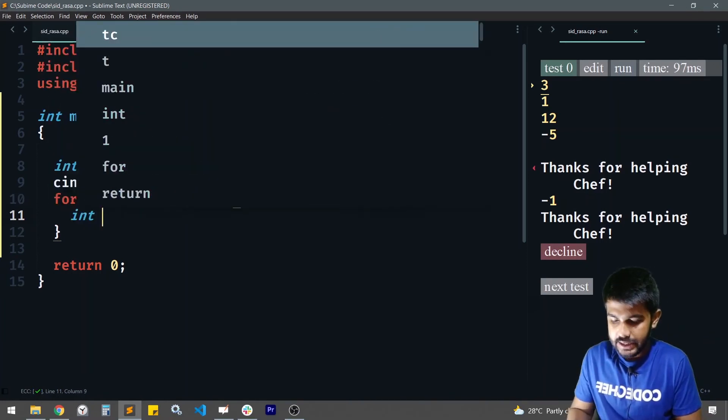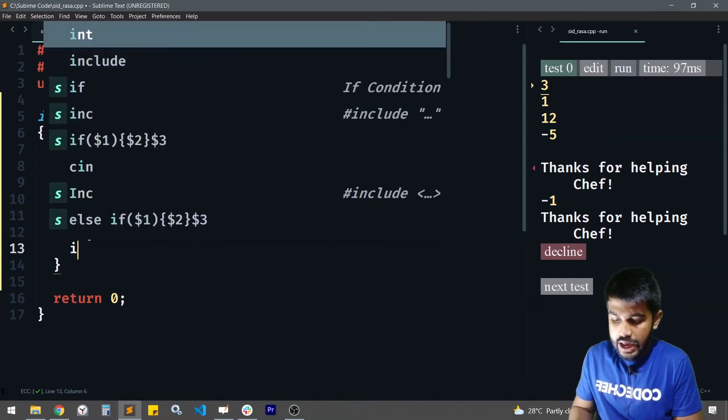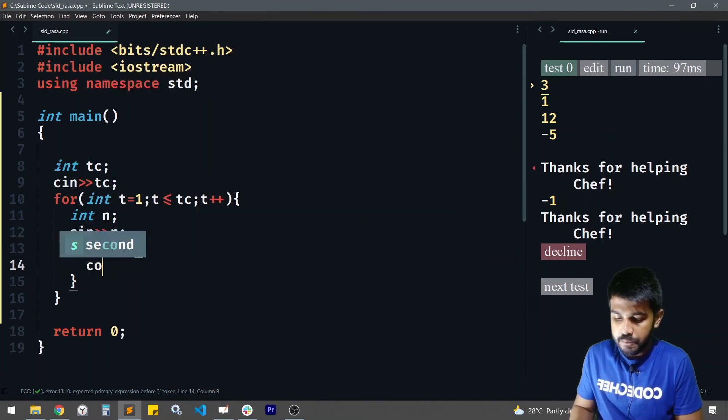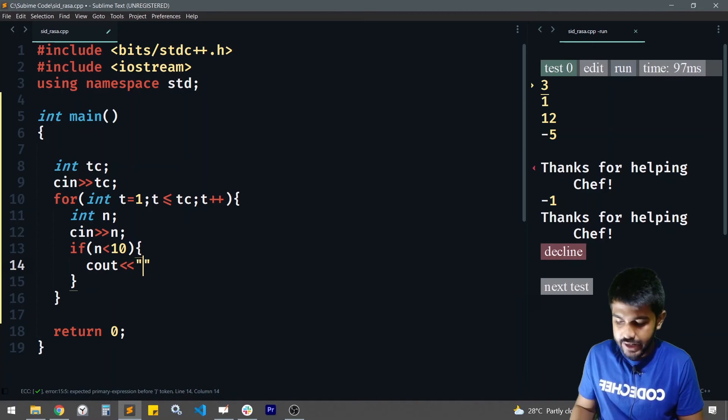Then we would be taking the input of the number itself, so int n, and then cin the n. If n is less than 10, what would we print? We would print that I have already copied the phrase itself.